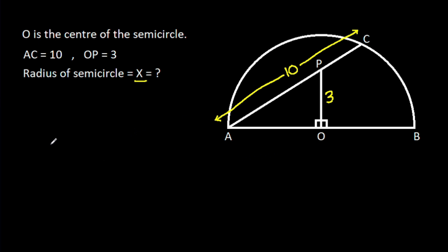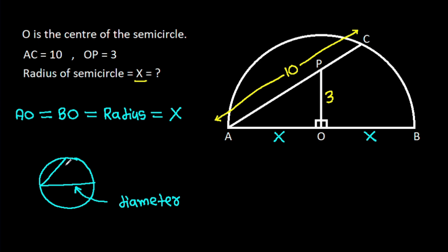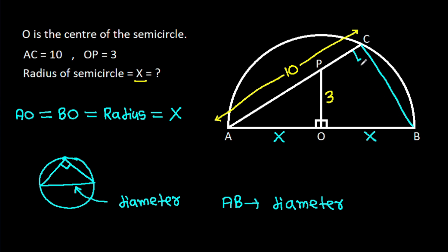AO will be equal to BO — that will be the radius and it is X. So AO is X and BO is X. In any circle, the diameter makes an angle of 90 degrees on the circle, and here AB is the diameter. So angle ACB will be 90 degrees.